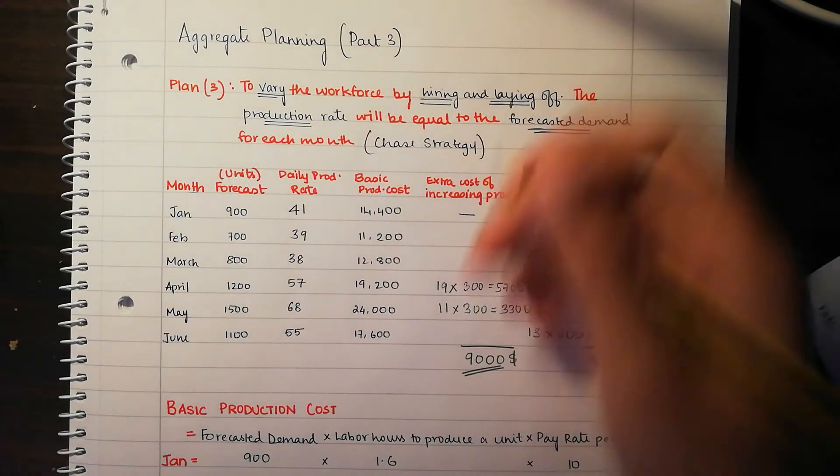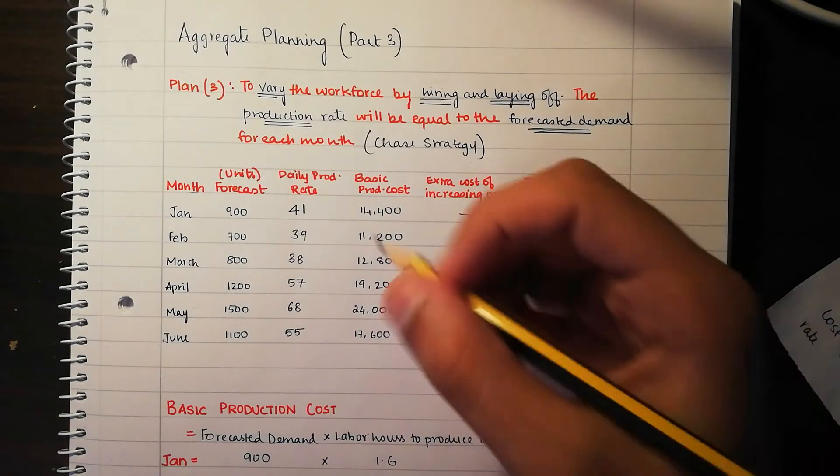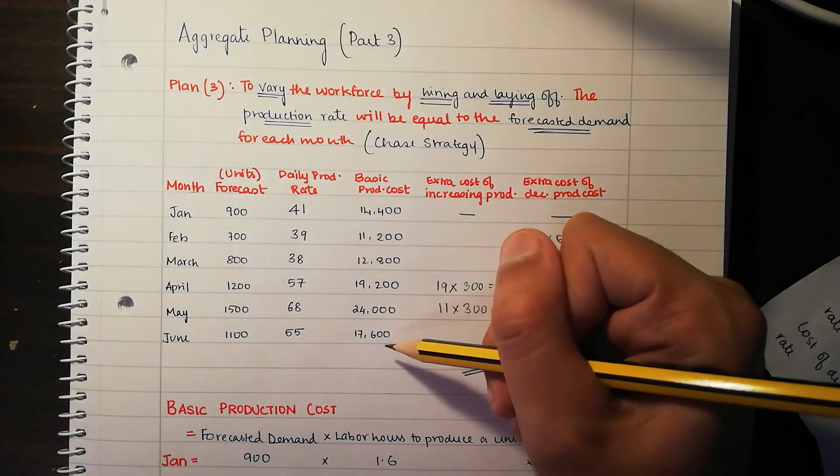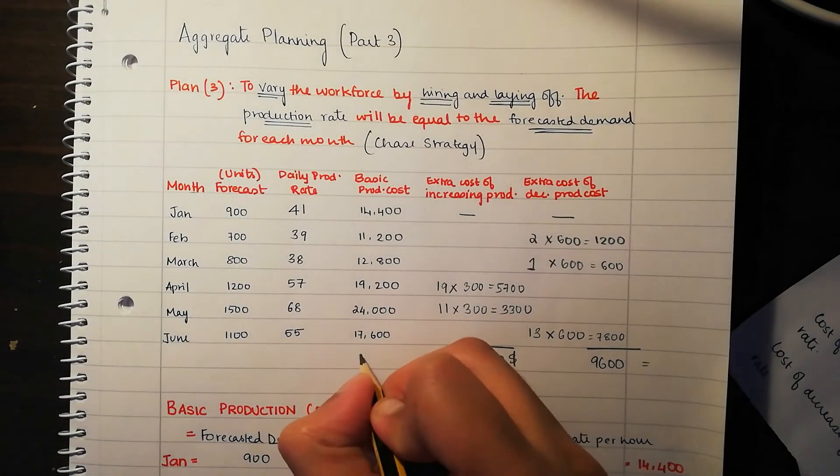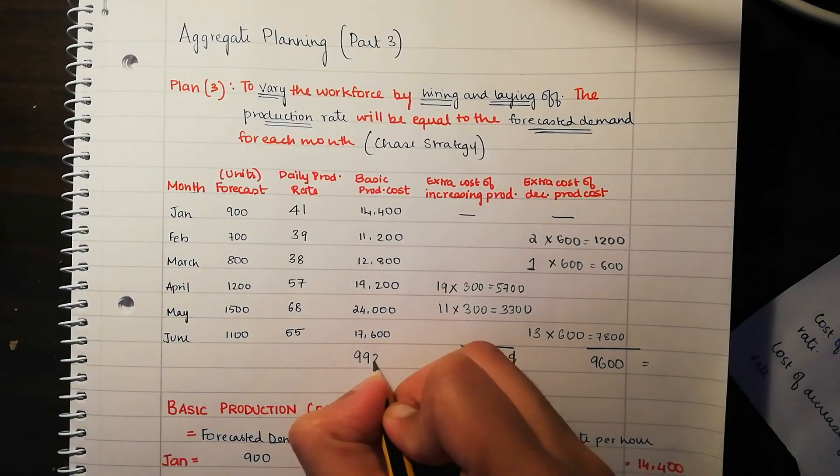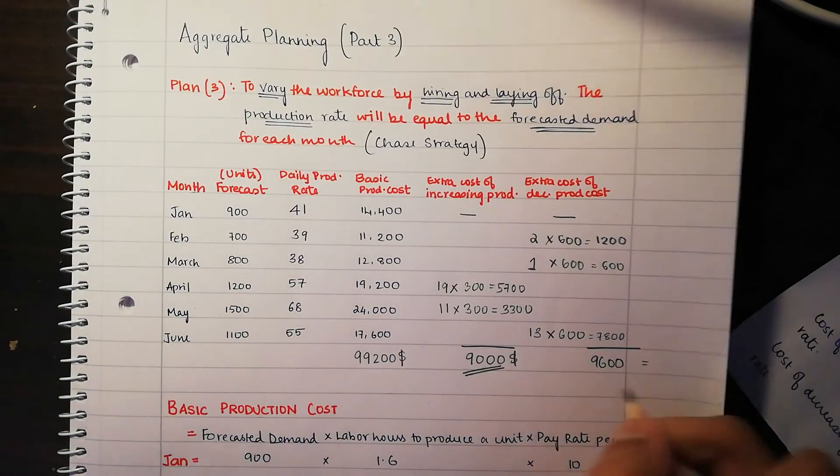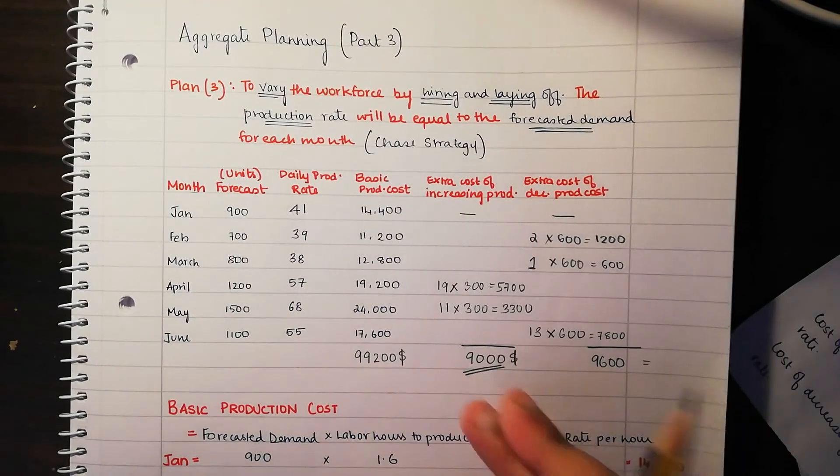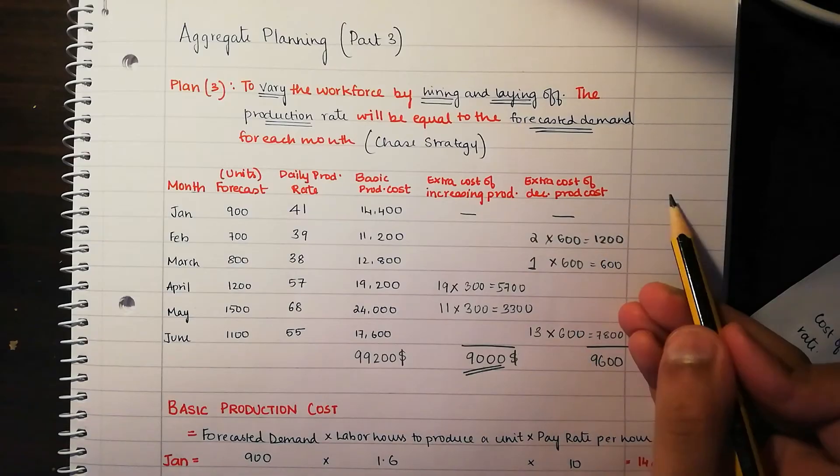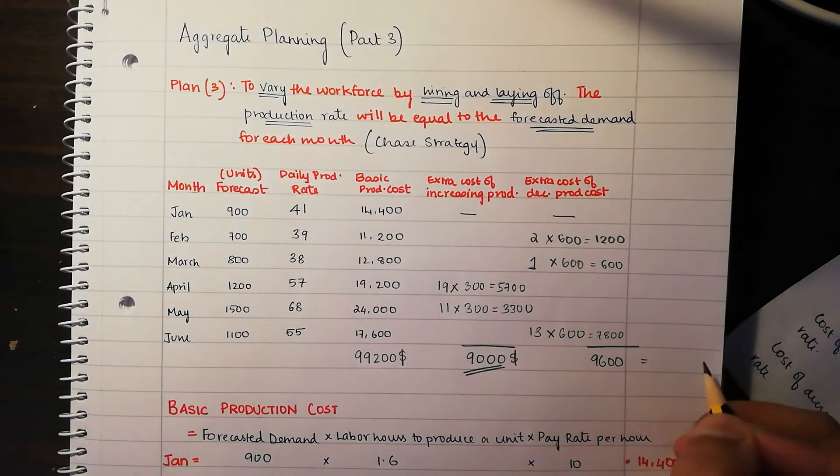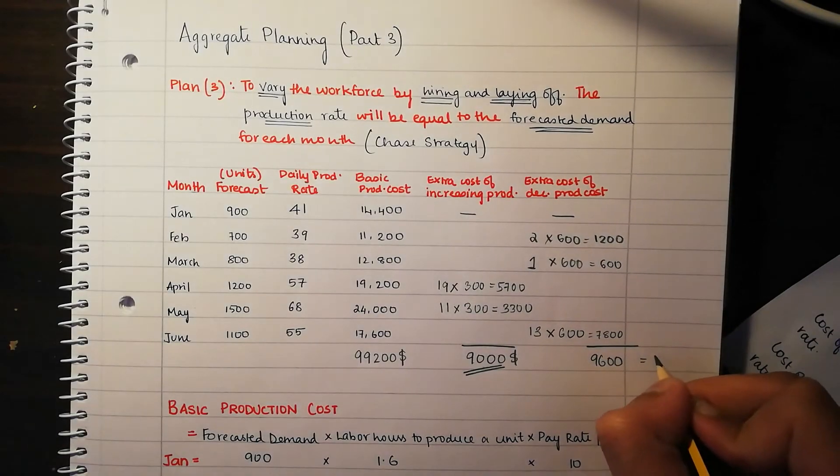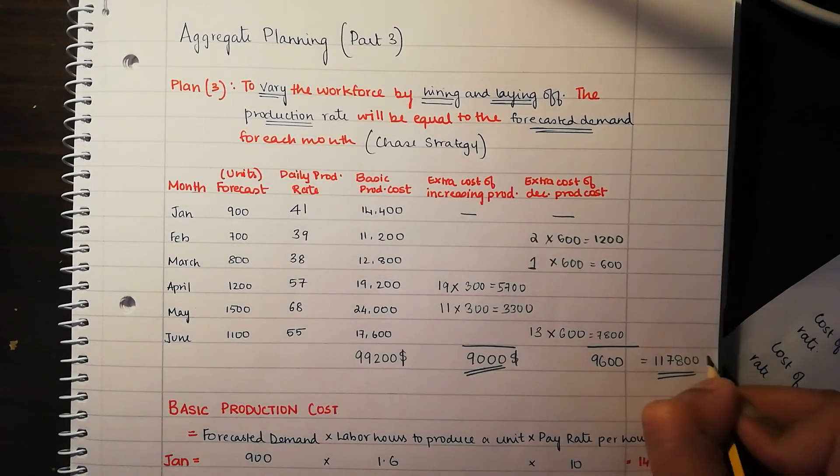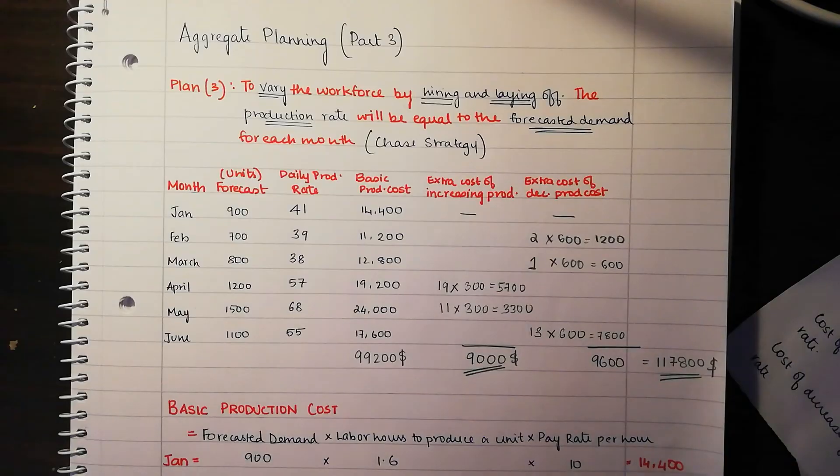For the total cost of plan 3, it's going to be pretty simple. There are two ways you can find this out. You can find the total cost of the basic production cost, all of this dollar amount. So that's going to be a sum of $99,200. Then your total cost is going to be the sum of all this. $99,200 plus your extra cost of production, plus your extra cost of decreasing production, all that is going to sum up to $117,800.